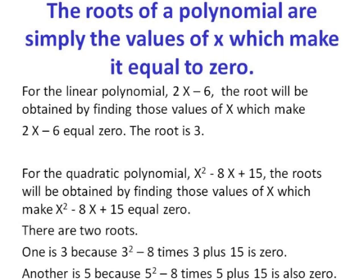In the linear example, solving 2x minus 6 equals 0 gives x equals 3, so the root is 3. For the quadratic x squared minus 8x plus 15 equals 0, there are two roots: x equals 3, because 9 minus 24 plus 15 is 0, and x equals 5, because 25 minus 40 plus 15 is also 0.